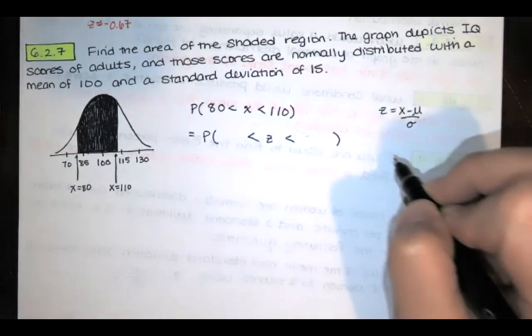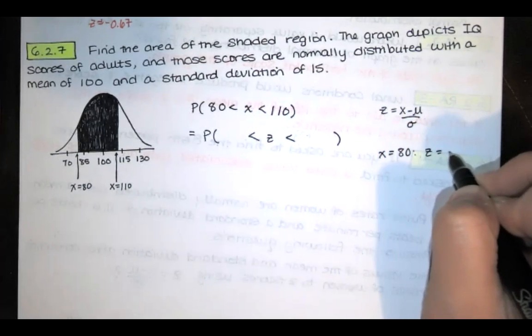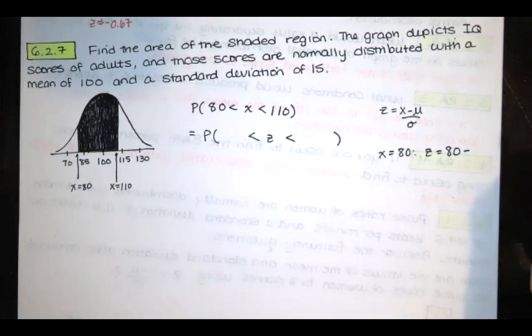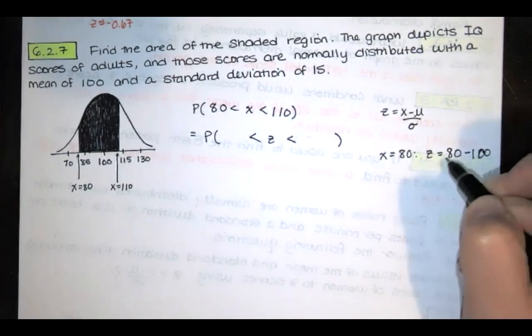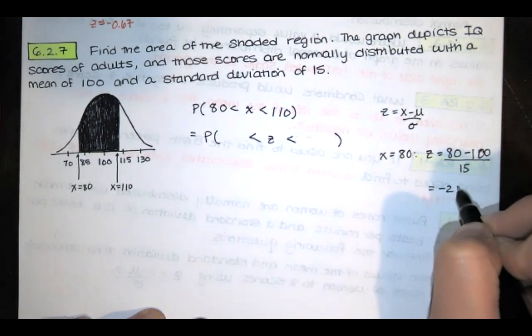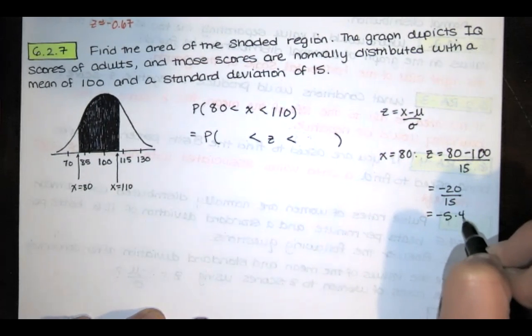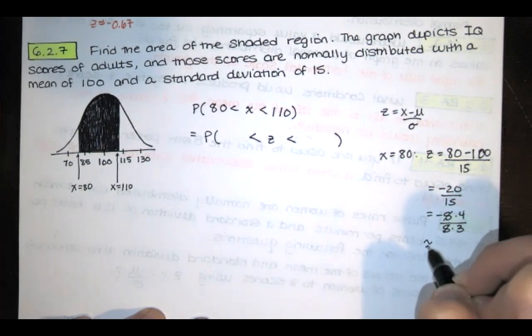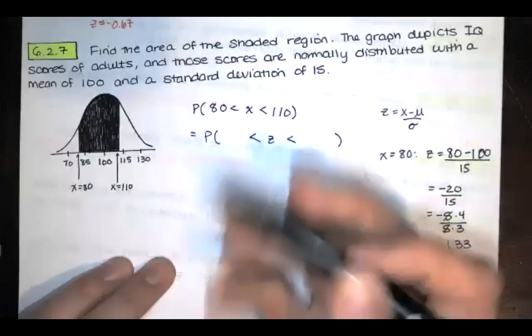So for x equals 80, we'll have z equals 80 minus the mean, which is 100, divided by the standard deviation. So we've got negative 20 over 15 and that's negative 5 times 4 over 5 times 3. So it's approximately negative 1.33. So that's our lower z value.